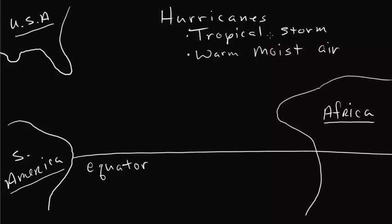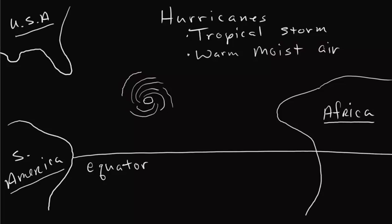Now to continue — as this hurricane travels, you can see that it's going in a counterclockwise direction, and again that's due to the Coriolis effect. If you're not sure why or if you're confused, go over that video again where I explain how the rotations go to the right, but with a low-pressure system this is to the right even though you might think it's going to the left.